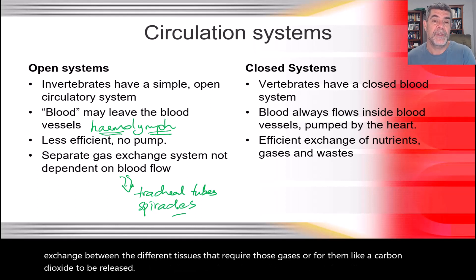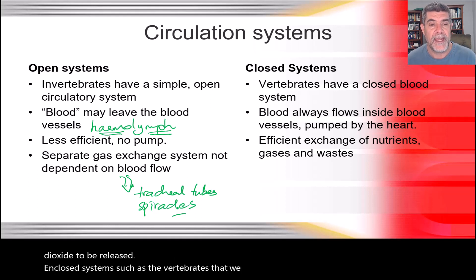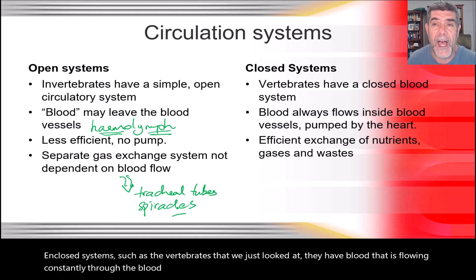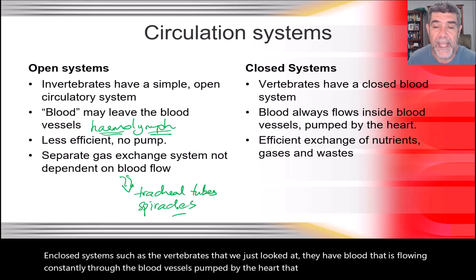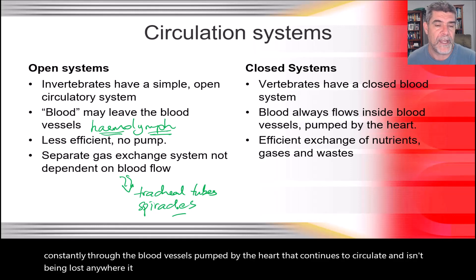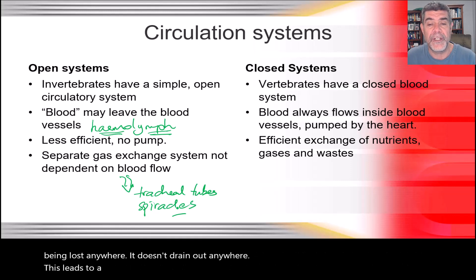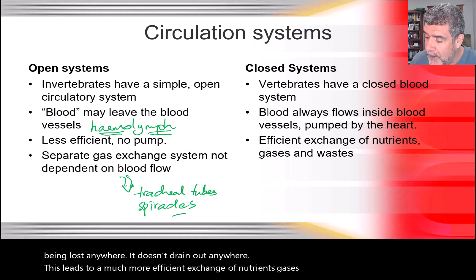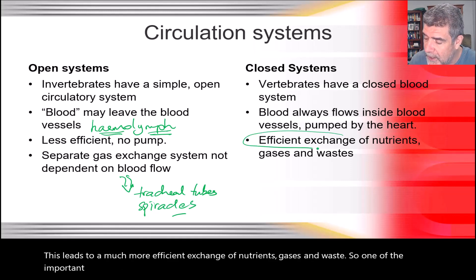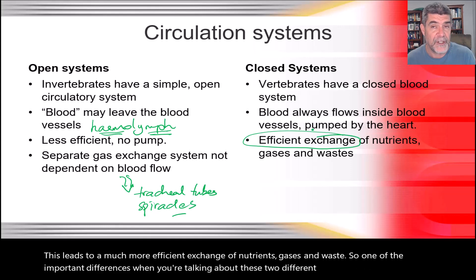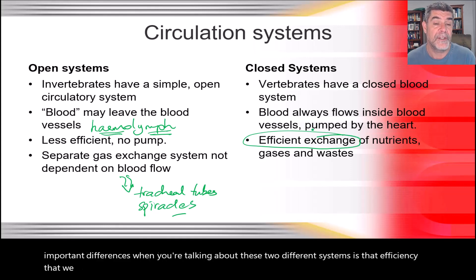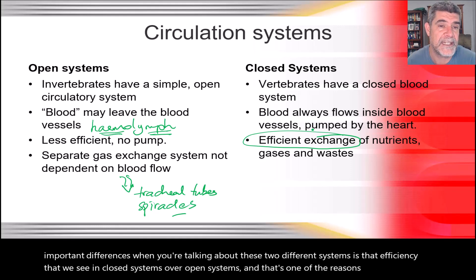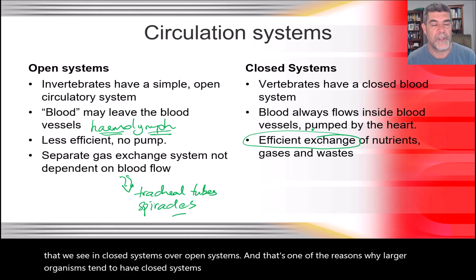In closed systems, such as the vertebrates we just looked at, blood flows constantly through blood vessels, pumped by the heart, continuously circulating without being lost anywhere. This leads to a much more efficient exchange of nutrients, gases, and waste. This efficiency is one reason why larger organisms tend to have closed systems, whereas small ones can get away with an open system.